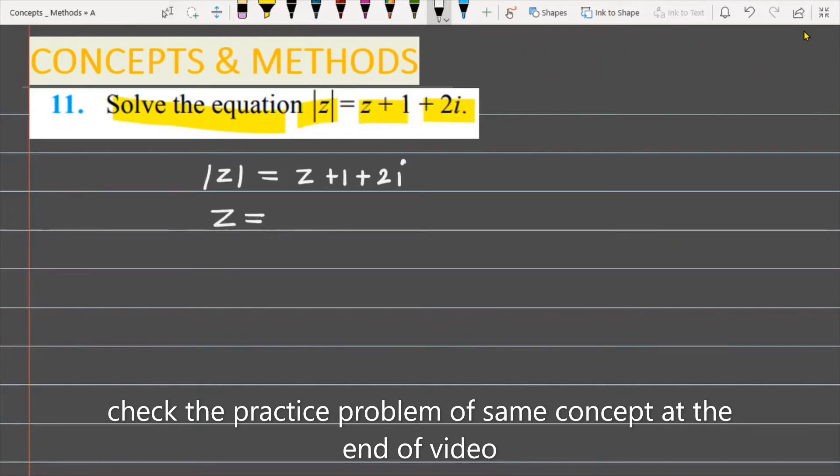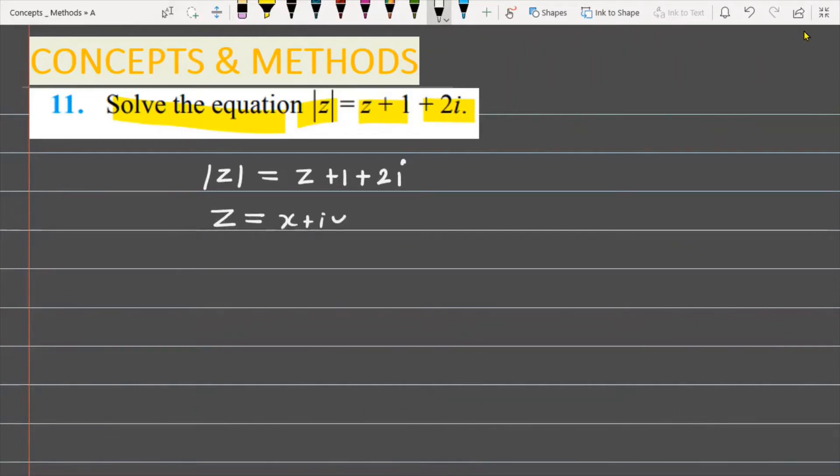Now assume that z is x + iy, which could be a complex variable or complex number. The modulus of z is under root of x² + y². This is the left-hand part.